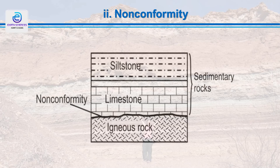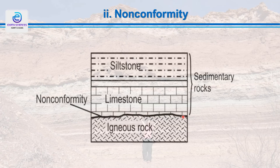In nonconformity, an igneous or metamorphic rock is overlaid by sedimentary rock, or we can say the crystalline rock is overlaid by some sedimentary bedded rocks — or it may be the opposite as well. The line of contact is always an erosional surface and it represents a hiatus or break in deposition. Whenever we have such a type of contact, we call it nonconformity.